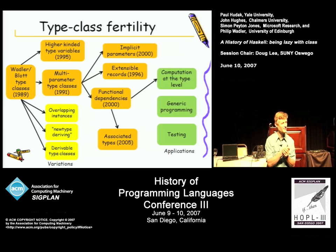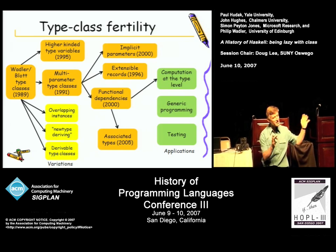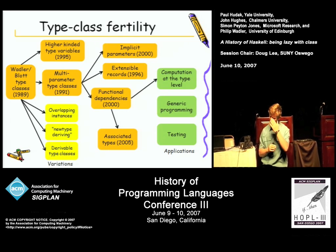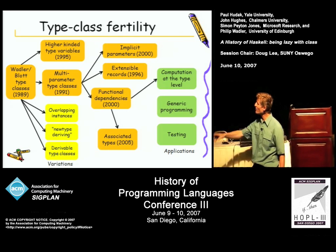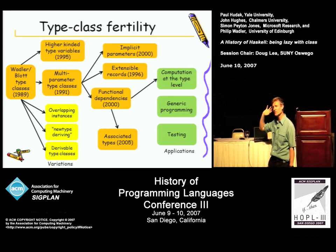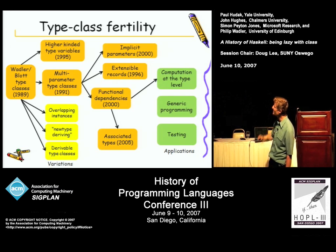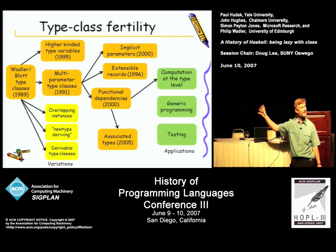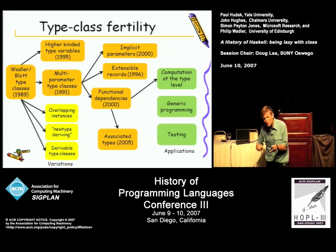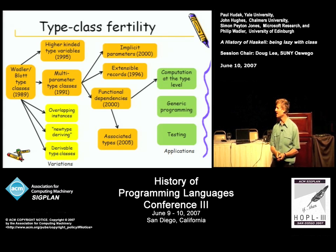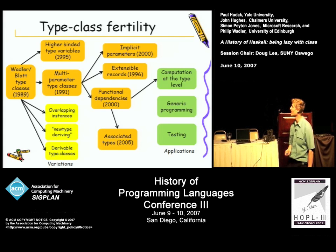So enough about a particular example. One way in which type classes gave rise to unexpected fertility was in the applications that people found for them, but also in the variants and developments that have arisen since. It's proved to be a much richer scene than we had initially anticipated, and that turned out to be a really very exciting thing.